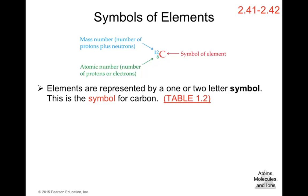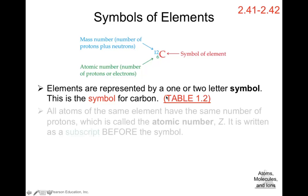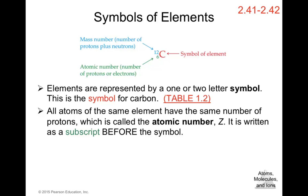Elements are represented by a one- or two-letter symbol. If the symbol has two letters, the first is capitalized and the second is lowercase. All atoms of the same element have the same number of protons, called the atomic number — this is also the number used in the periodic table. The atomic number is represented by Z and written as a subscript before the symbol.